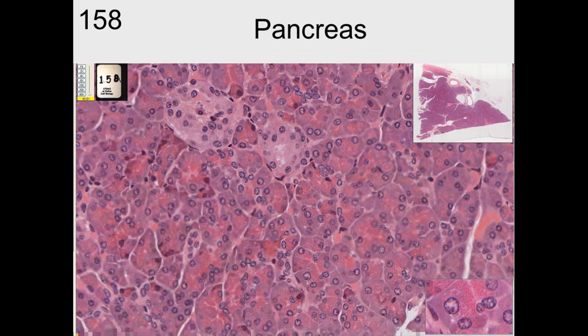And in this particular slide, 158, you can see the base of the cells, the cytoplasm, is blue. But as you go to the lumen of the cell, which you can hardly see the lumen in the pancreas, you see red granules. These red granules are secretory granules that are going to be secreted into the lumen.